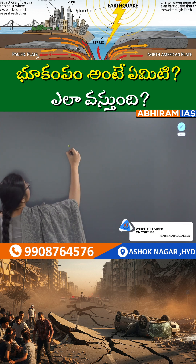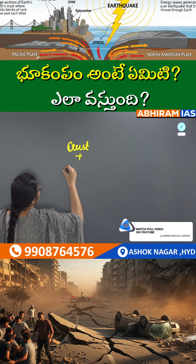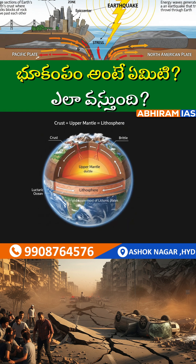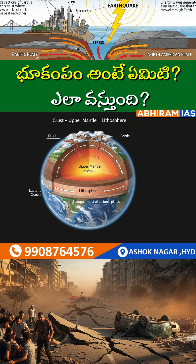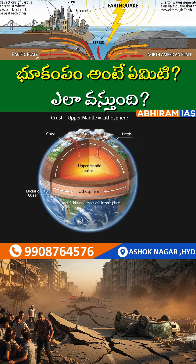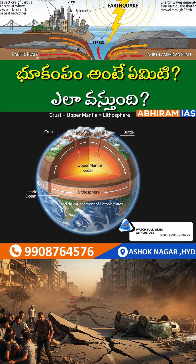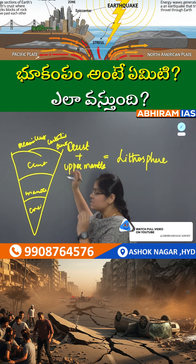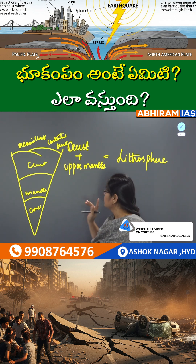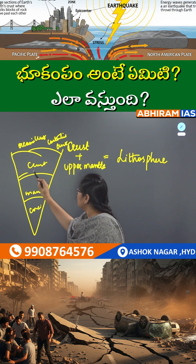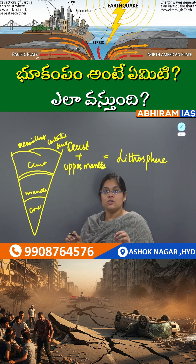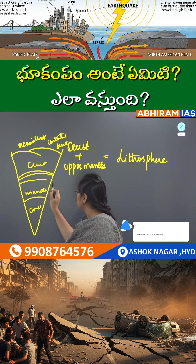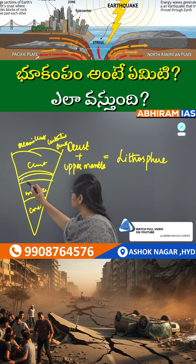The crust plus the upper mantle together is called the lithosphere. So crust plus upper mantle equals lithosphere, and the lithosphere floats on the layer beneath it.